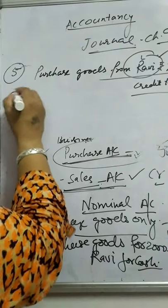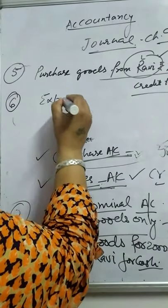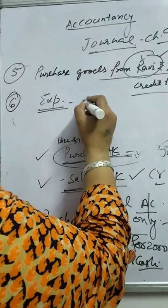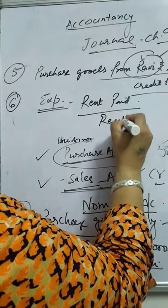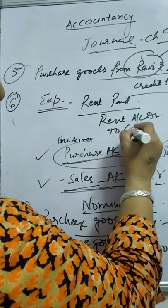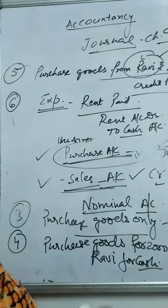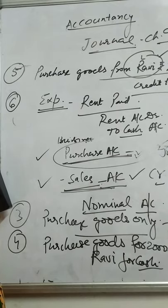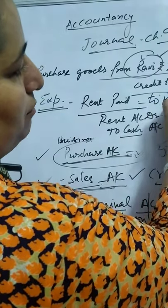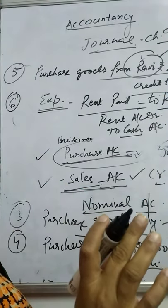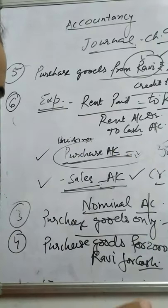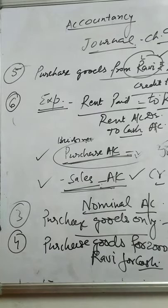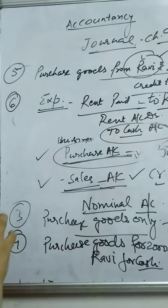Regarding expenses, there is a rule. For example, if 'rent paid' is given, rent is an expense so rent account will be debited, and cash account will be credited. Always expenses are debited. Even if it says 'rent paid to landlord,' you have to treat it as an expense — rent account debit. Whether it is paid to anyone does not impact the second account; only the cash account will be credited.